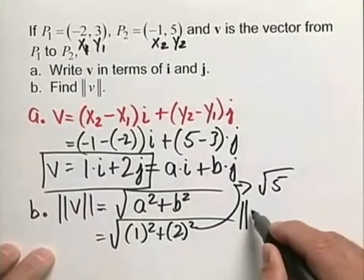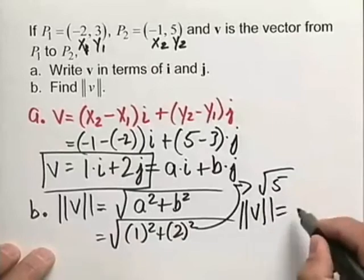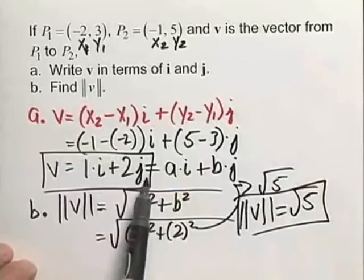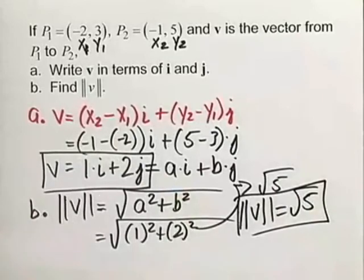So we can say that the magnitude of this vector is equal to the square root of five. So we've done it. We have our vector in terms of i and j, and we found the magnitude of that vector.